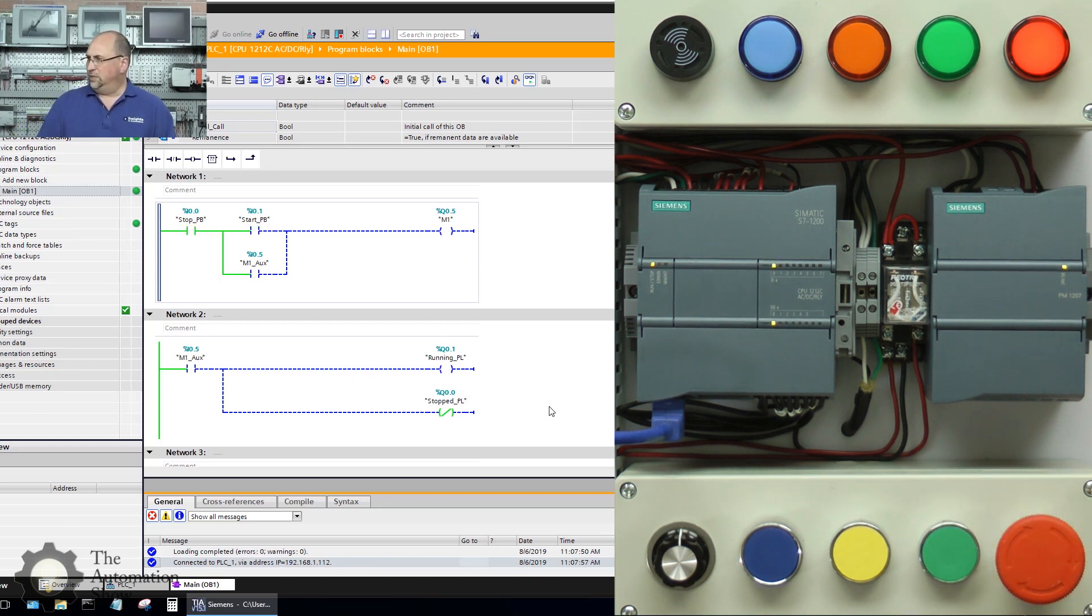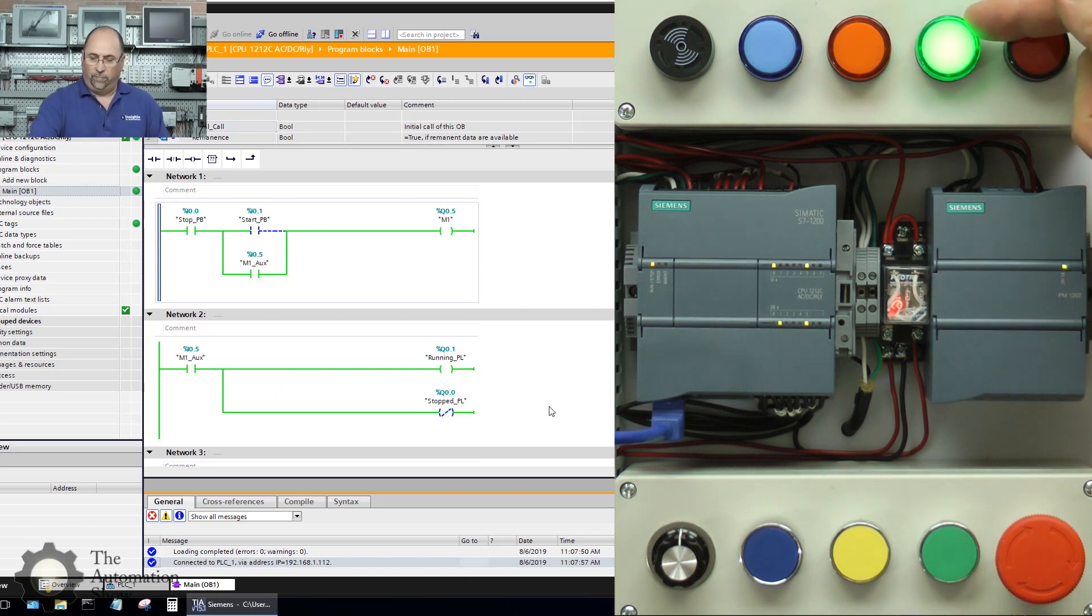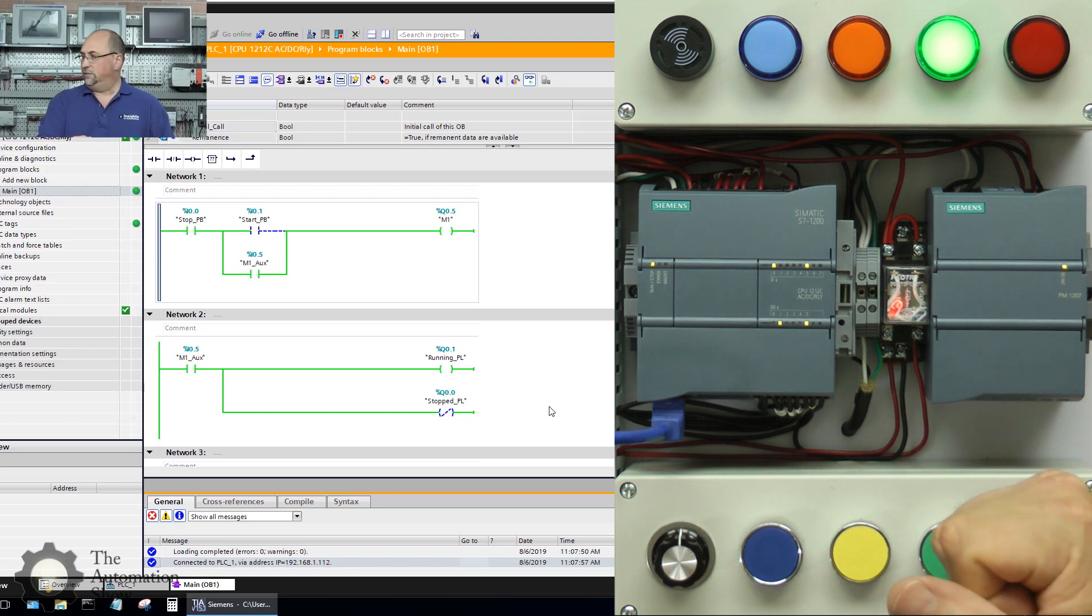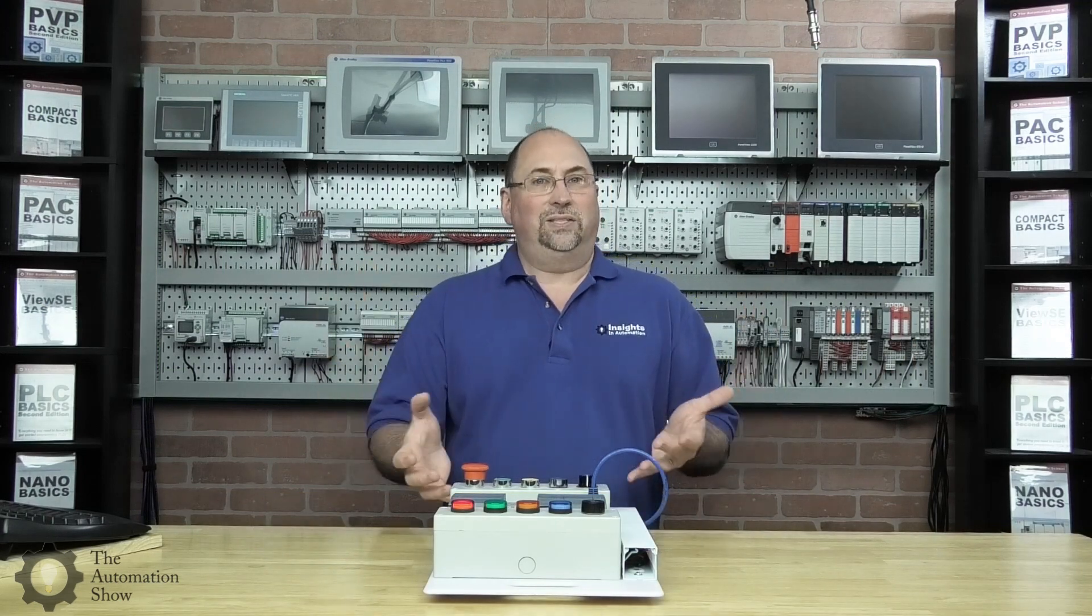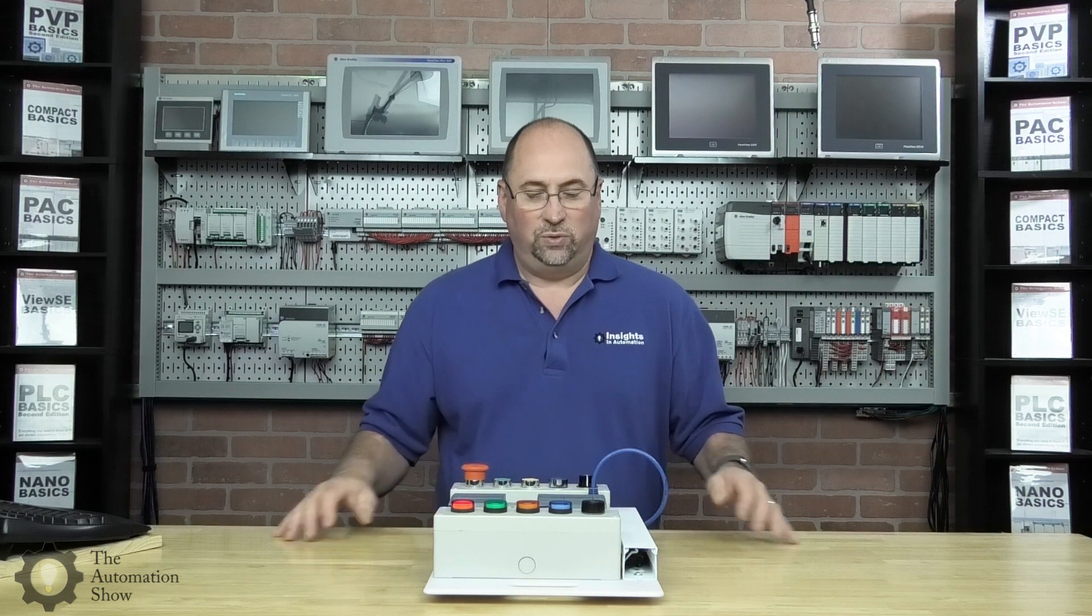Let me release my stop button, press my start button. And look, I have my green pilot light. My relay is on. You can see the auxiliary contact sealing in my start button, keeping everything on. And if I hit stop, see, I dropped it out again.